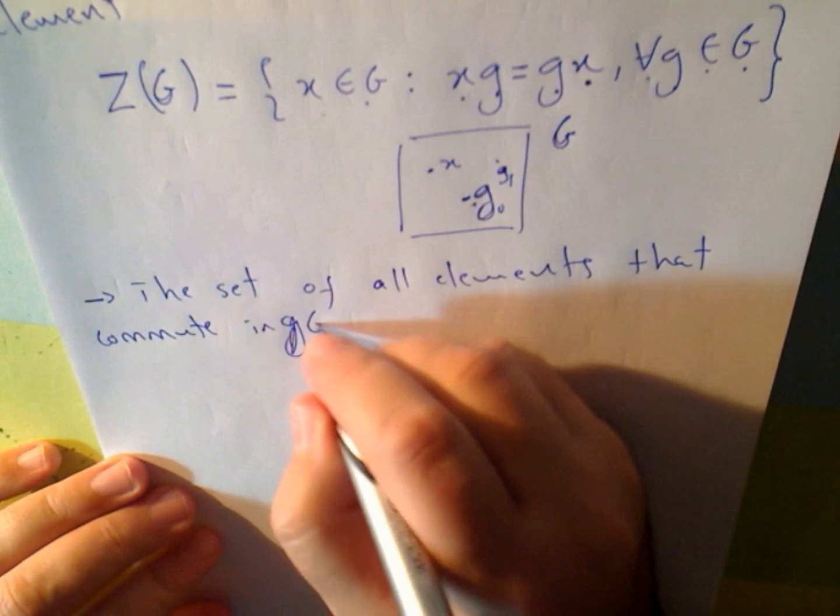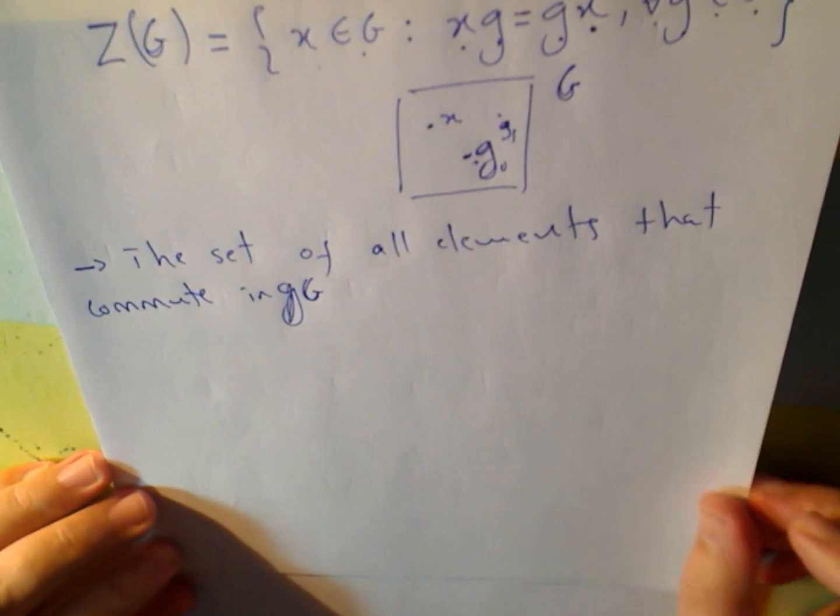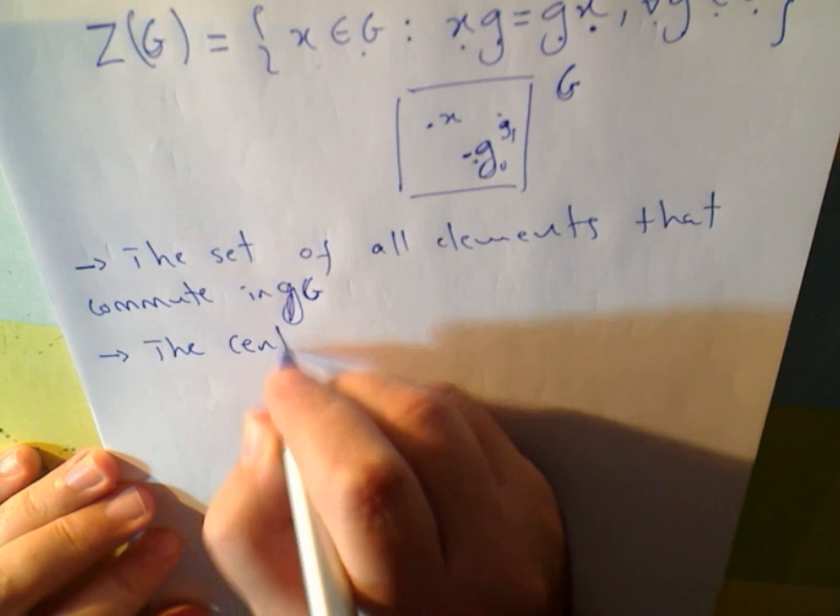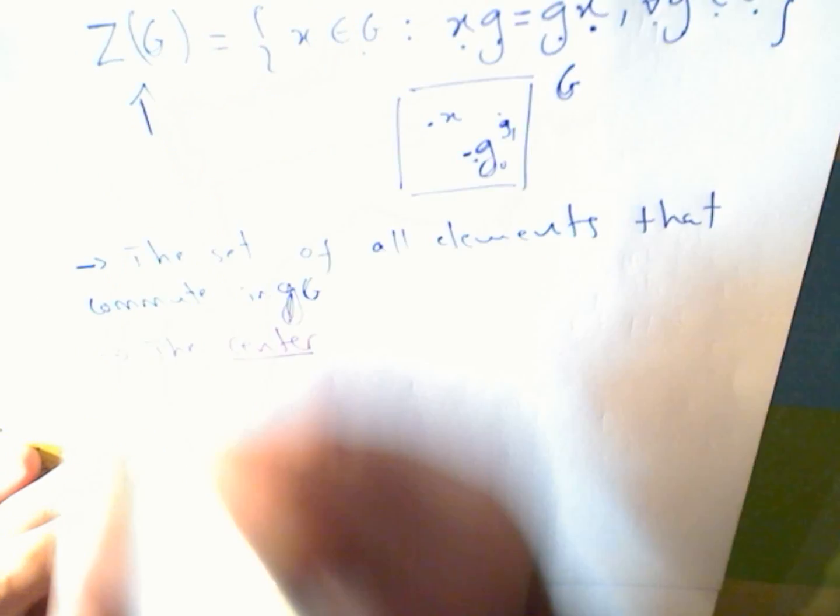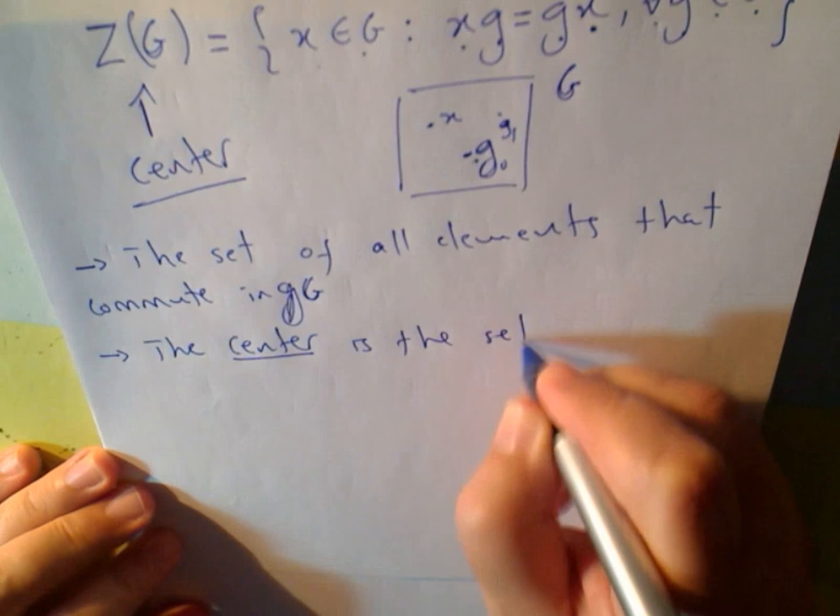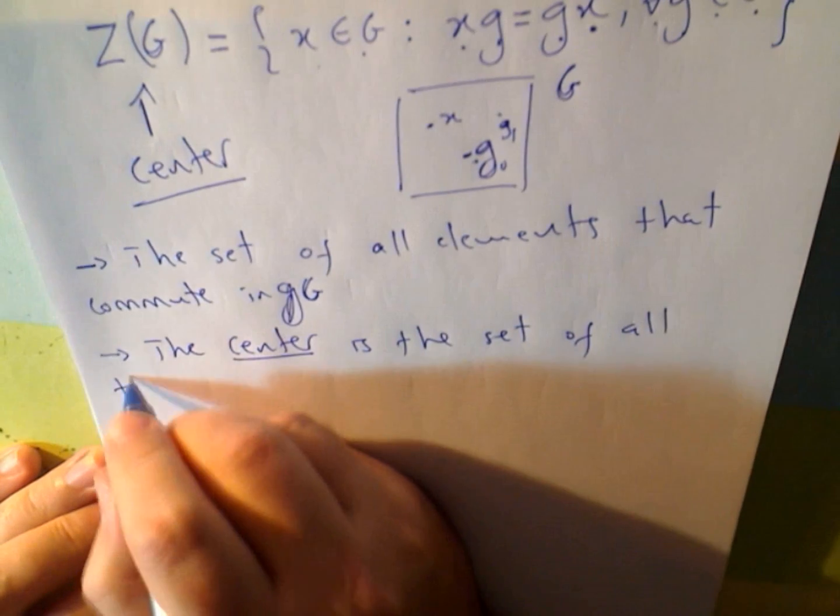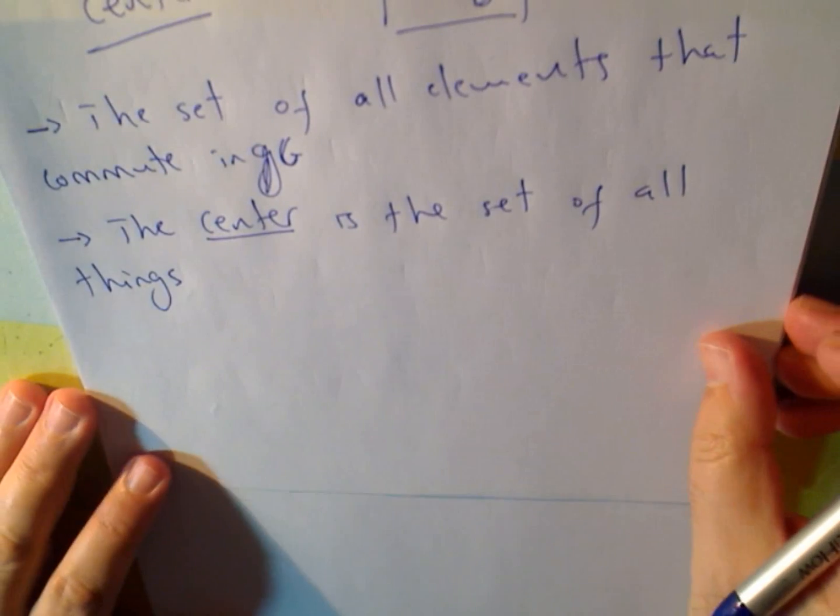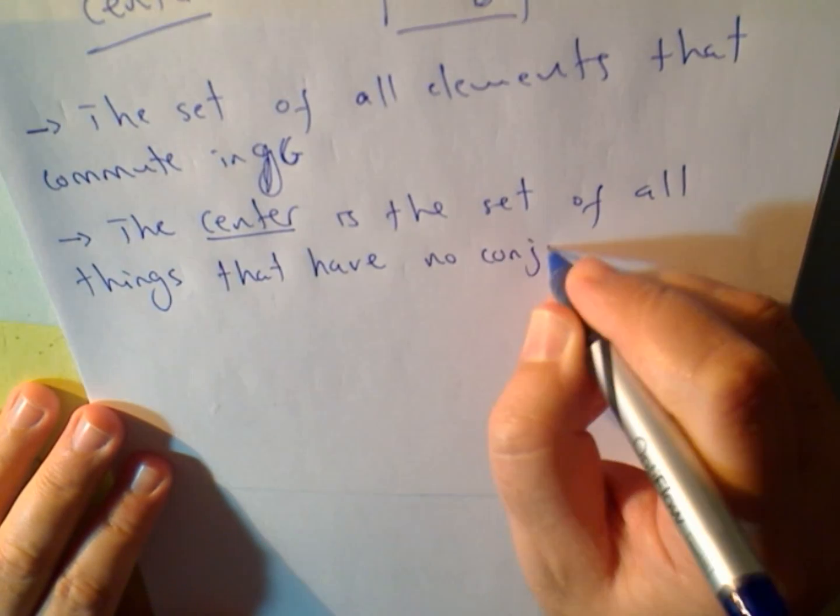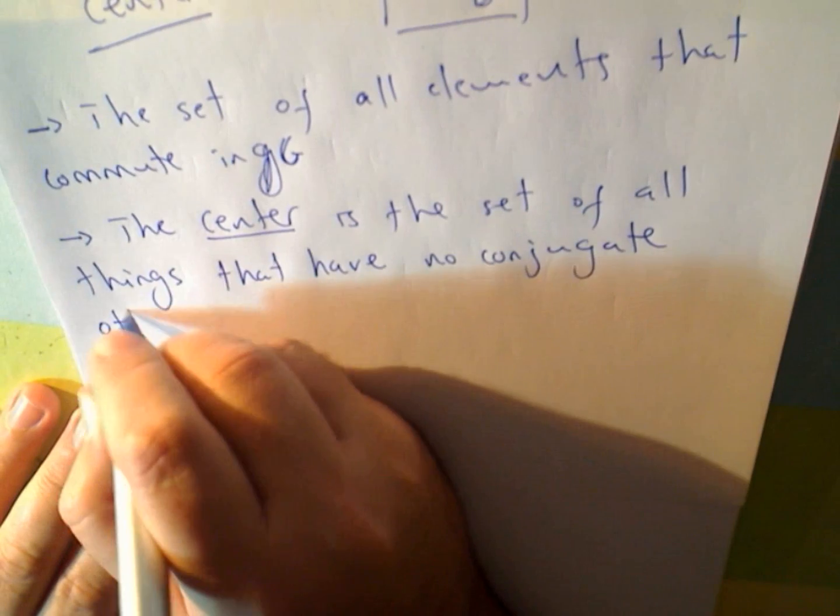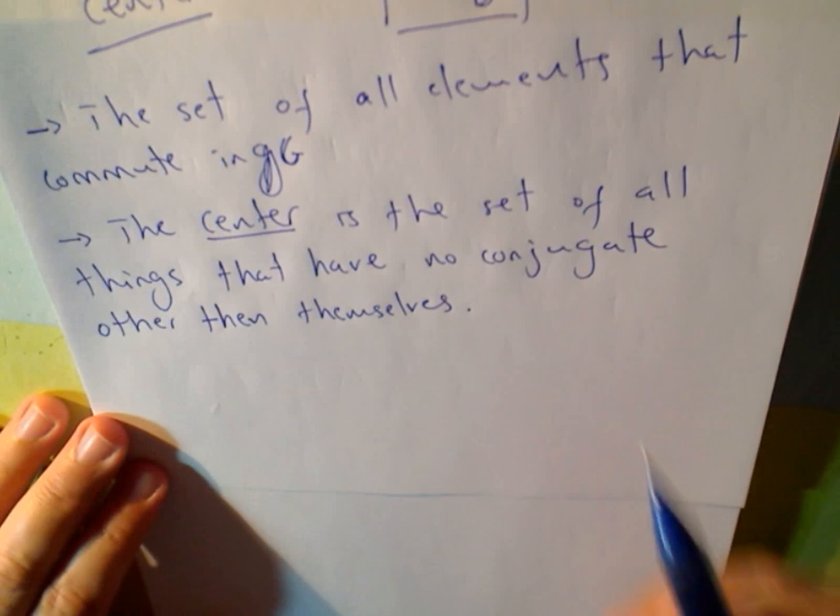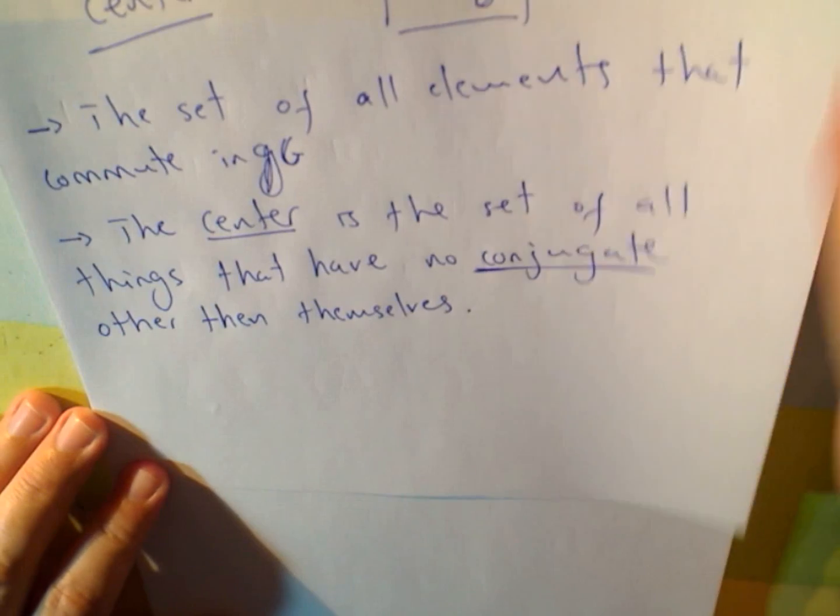Since we already spoke in G group, we already spoke about this commutation. I can also say that the center is the set of all things that have no conjugate other than themselves. If you don't know what the conjugate is, please go back to one of my previous videos.